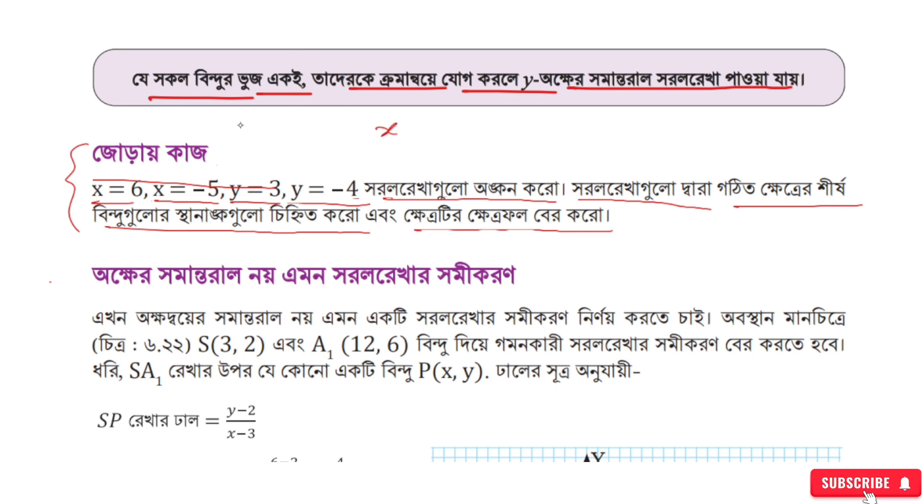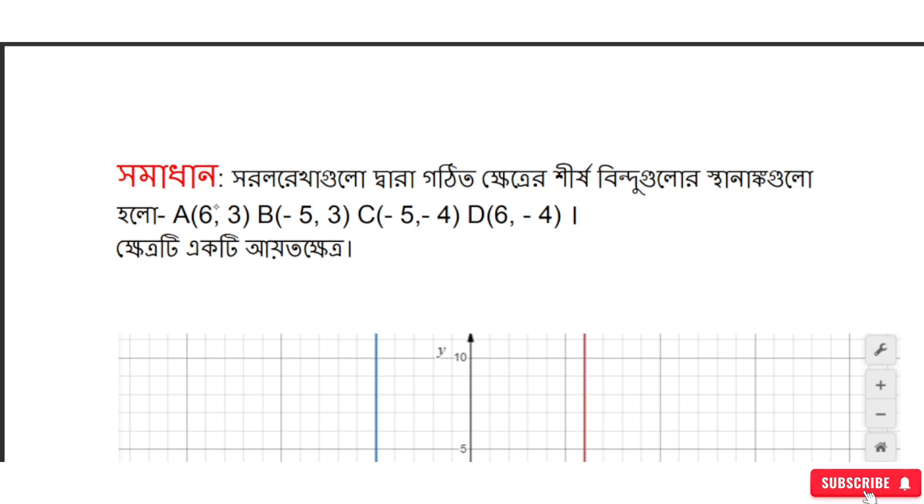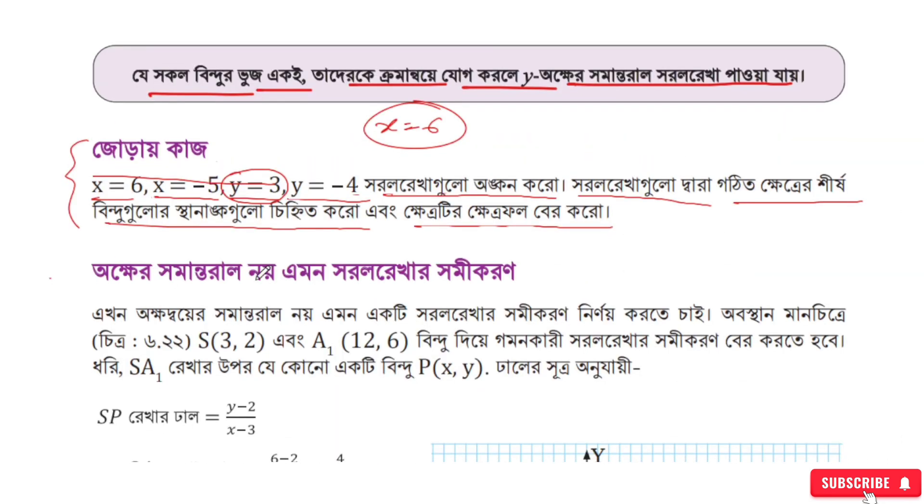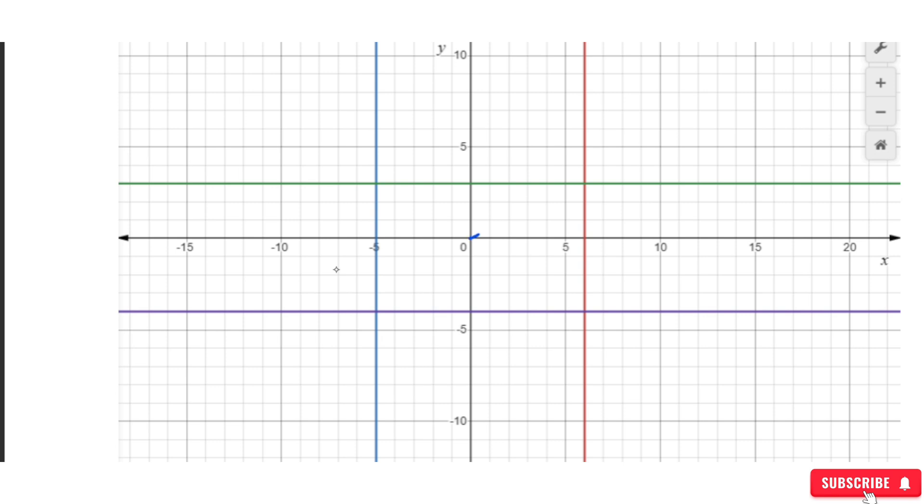First, let's draw x equal to 6. When x equals 6, we draw a vertical line through x equals 6. This line is parallel to the y-axis and passes through x equals 6 on the coordinate plane.